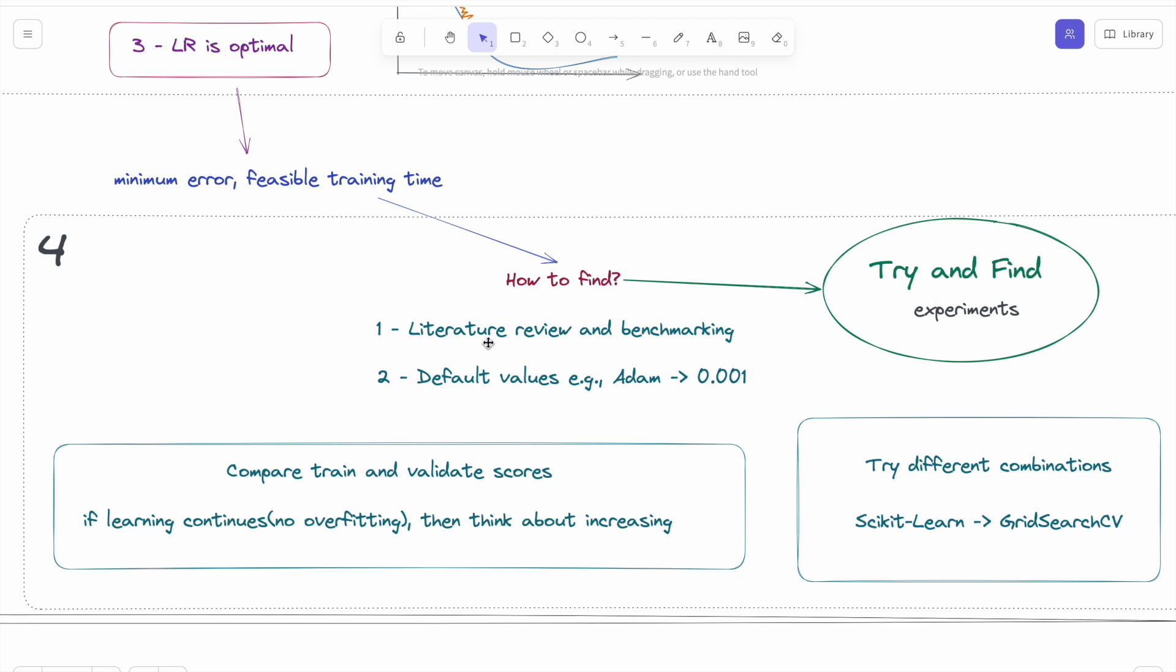The first thing you can do is check the literature review, check similar projects, similar datasets, and their learning rate values. Also, you can use the default values of optimizing algorithms. For example, for Adam, you can use 0.001. Then you can slightly change the learning rate.